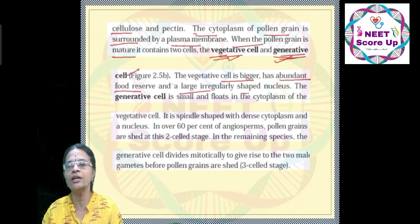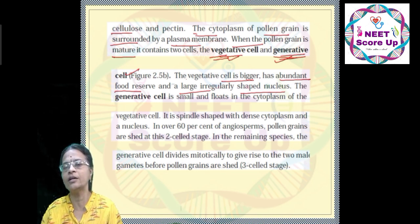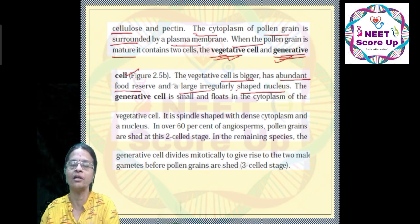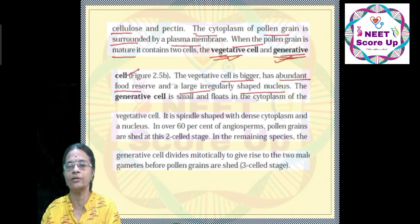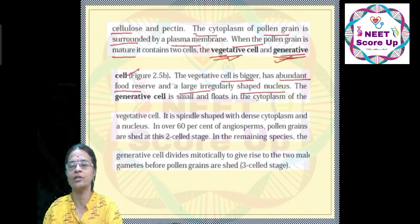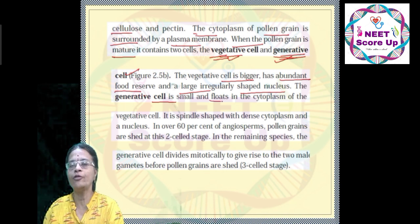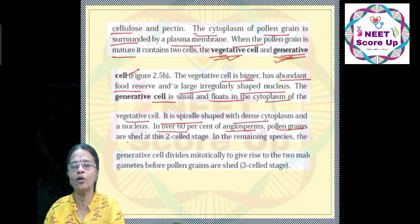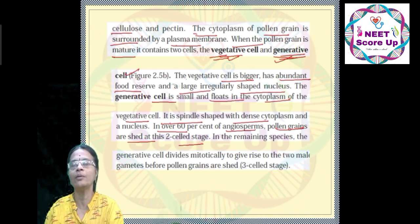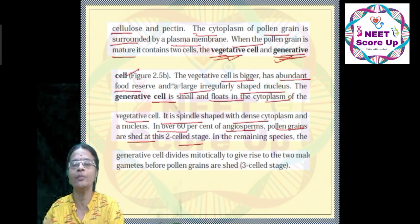The vegetative cell is large and irregular in shape, with an abundant food reserve. The generative cell is small and floats in the cytoplasm of the pollen grain. The pollen grain may be shed at the two-cell stage. The microspores mature into pollen grains, which are liberated from the anther.